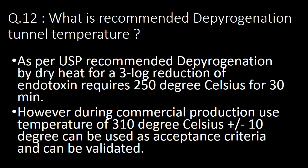12th question: what is the recommended depyrogenation tunnel temperature? As per USP, recommended depyrogenation by dry heat for a 3-log reduction of endotoxin requires 250 degrees Celsius for 30 minutes. However, during commercial production, a temperature of 310 degrees Celsius plus or minus 10 degrees can be used as acceptance criteria and can be validated.